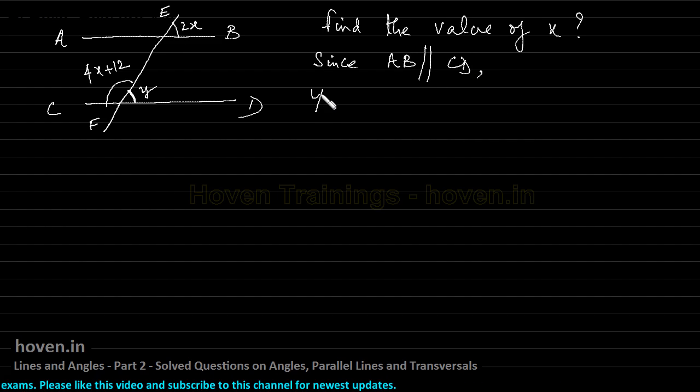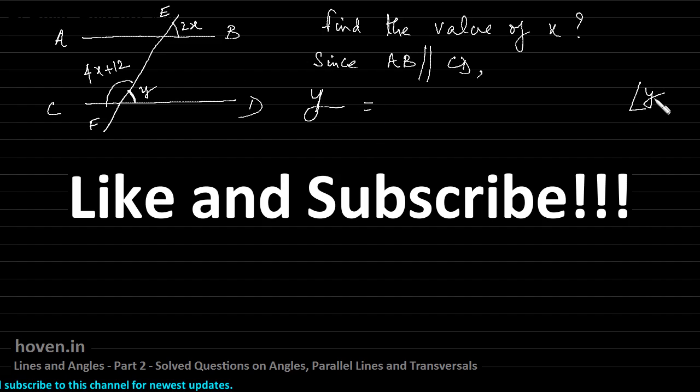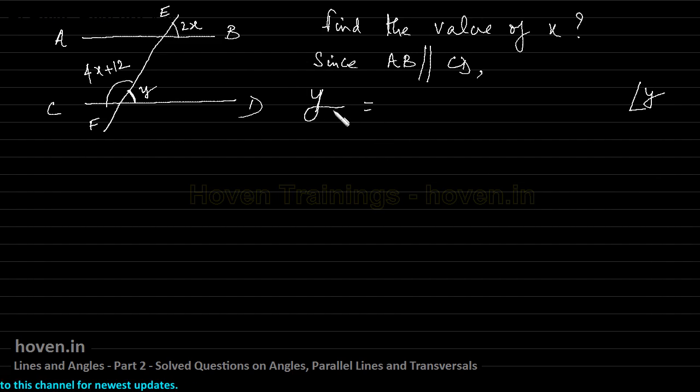Since AB is parallel to CD, angle y, I will simply write y to avoid the angle sign there. To simplify things, to simplify clutter, I will say y should be exactly equal to 2x. This is one thing that is available with me. Since AB and CD are parallel, y should be exactly equal to 2x.